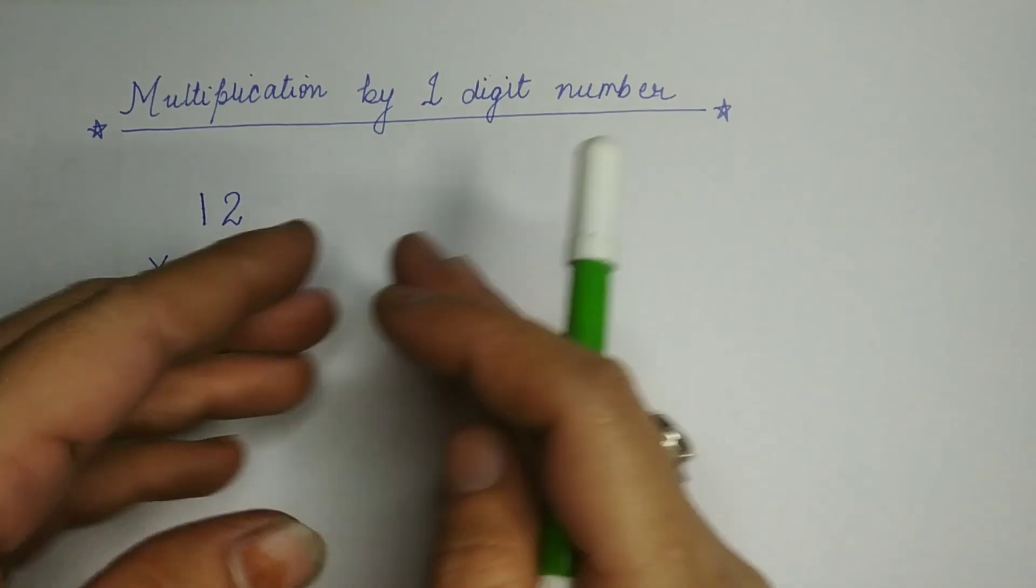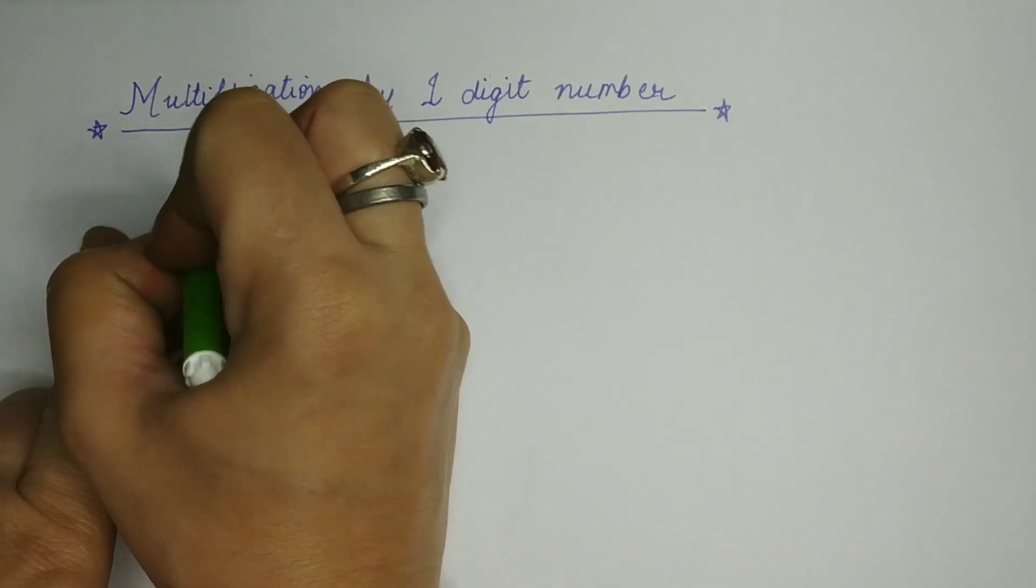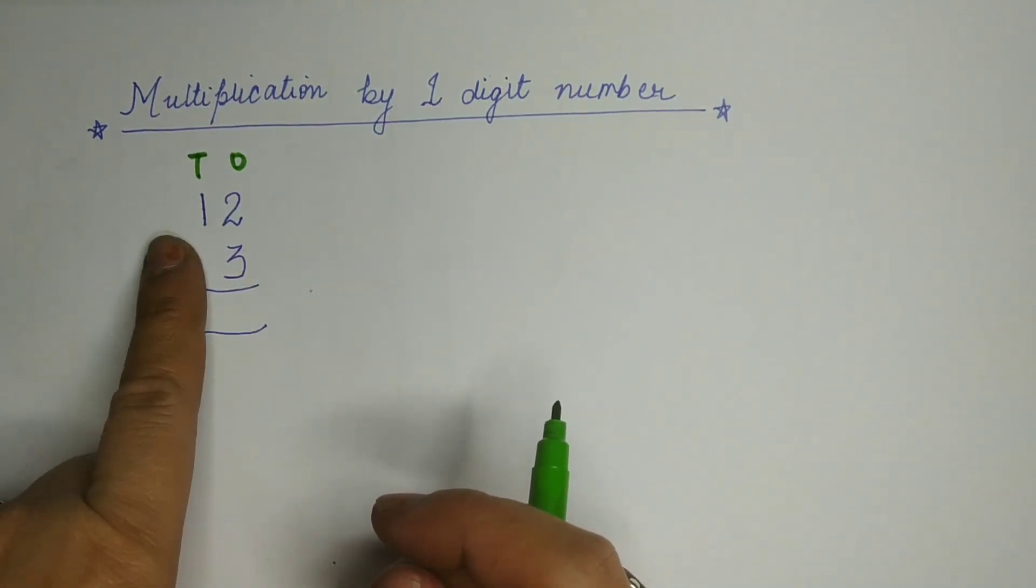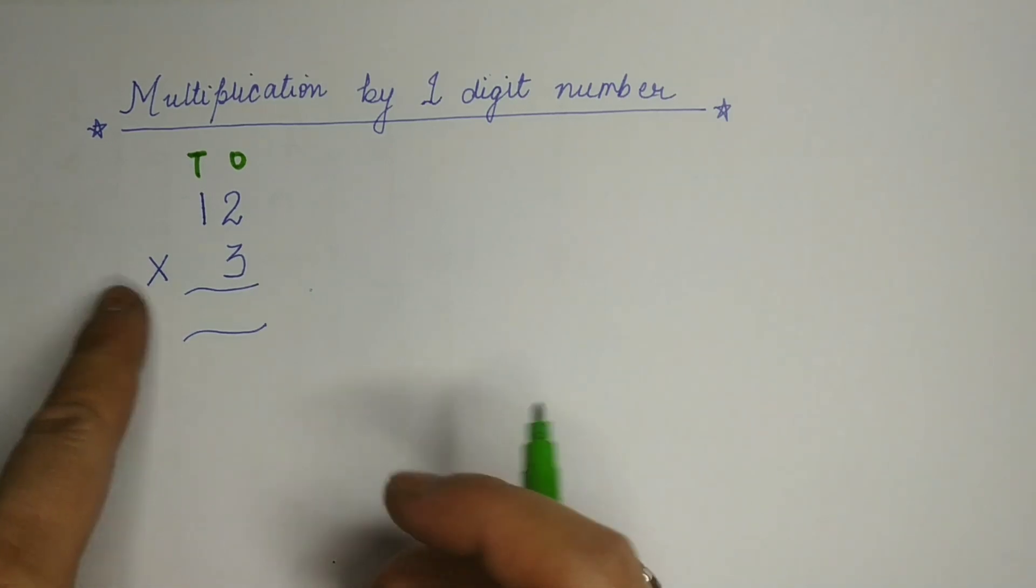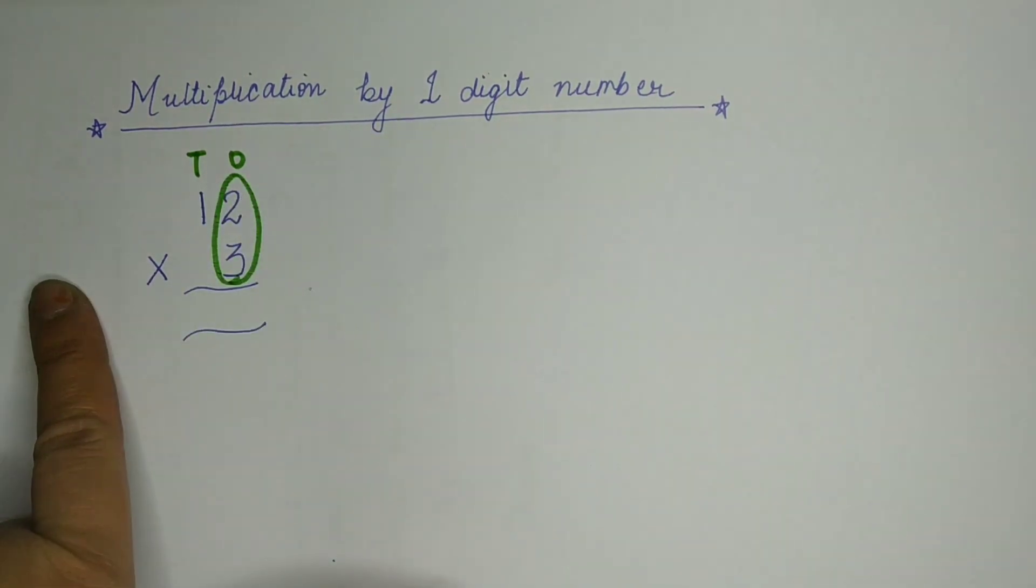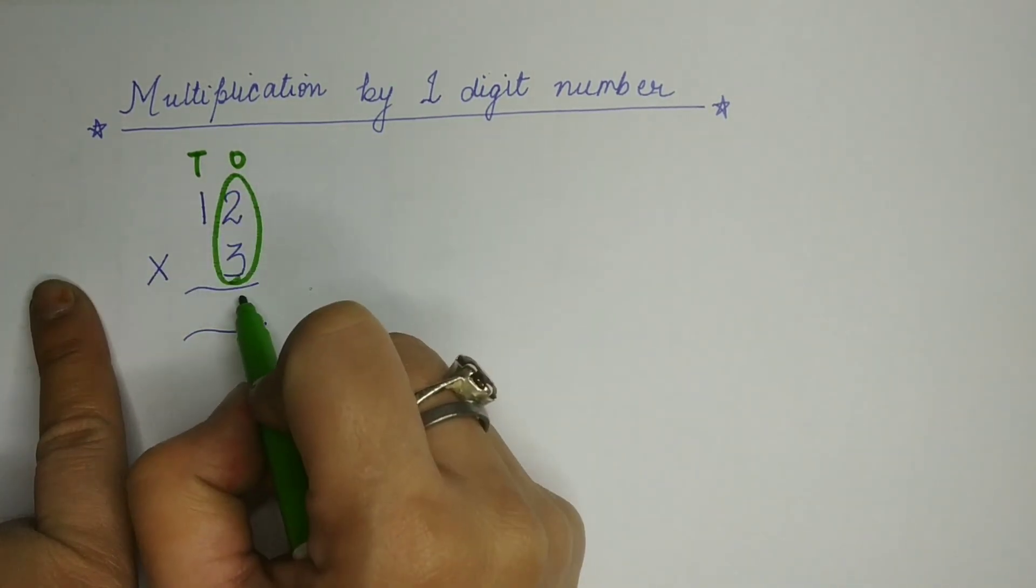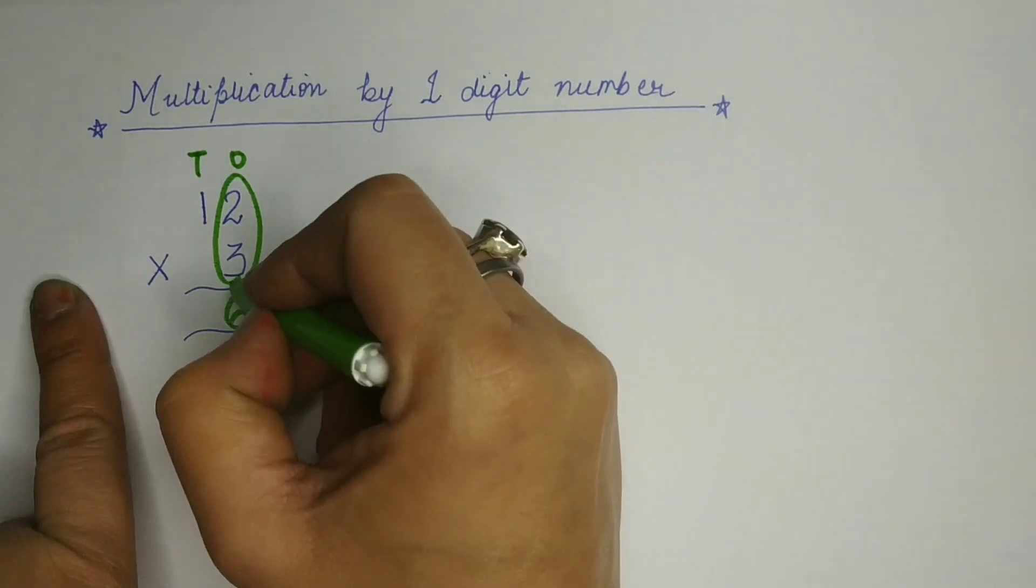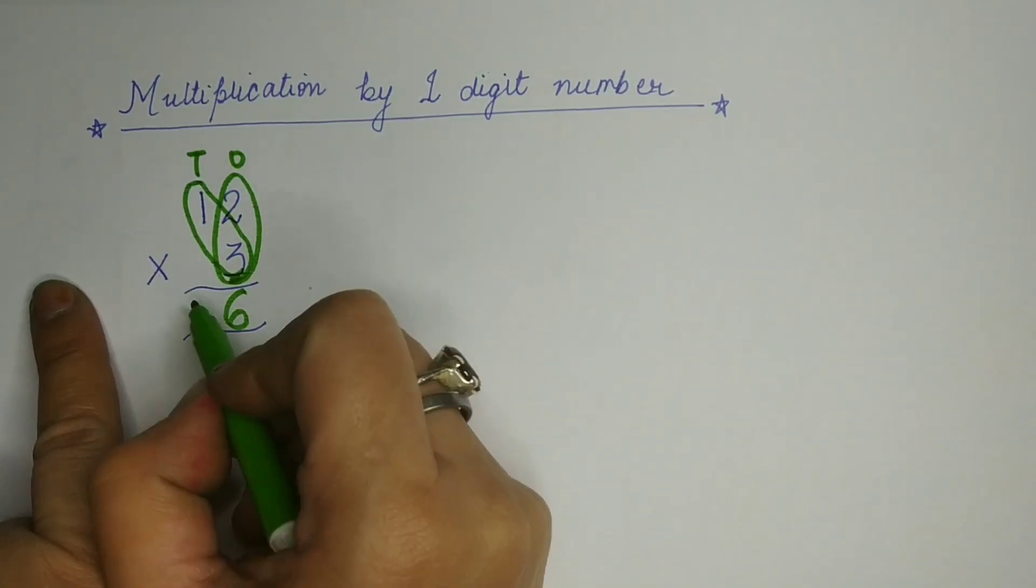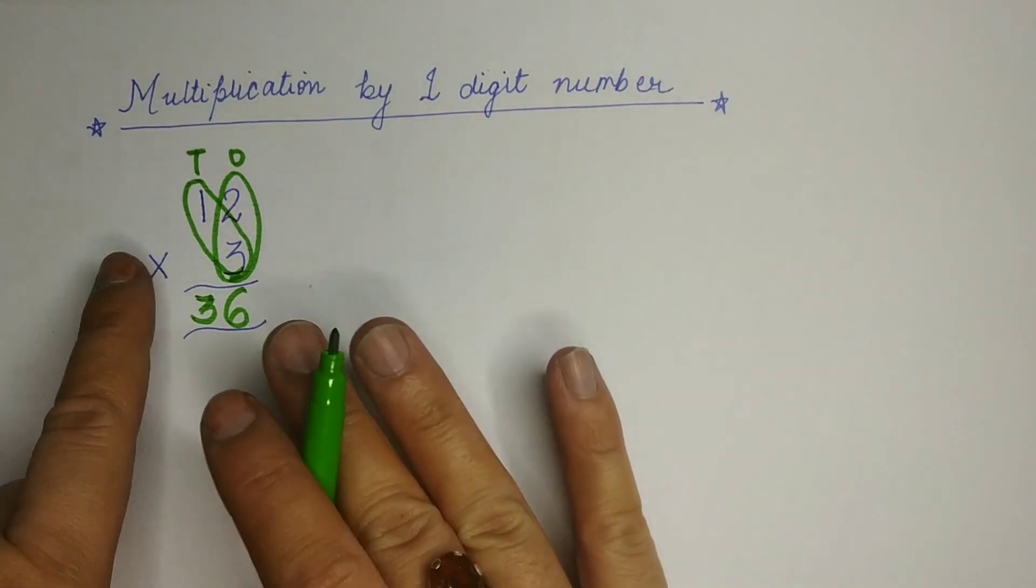One in a simple way and one with a beautiful Vedic activity. So you must be aware about all these things that first number is ones and second number is tens. Isko solve karne ka ek way hota hai. First of all, jo aapke paas neechi number hai, we are going to multiply this number first. Hum sabse pehle isse multiply karte hai. That is 3 multiply by 2 is 6. Then we are going to multiply this number with this number. That is 3 multiply by 1. That is 3. The answer will be 36. It is easy to understand.